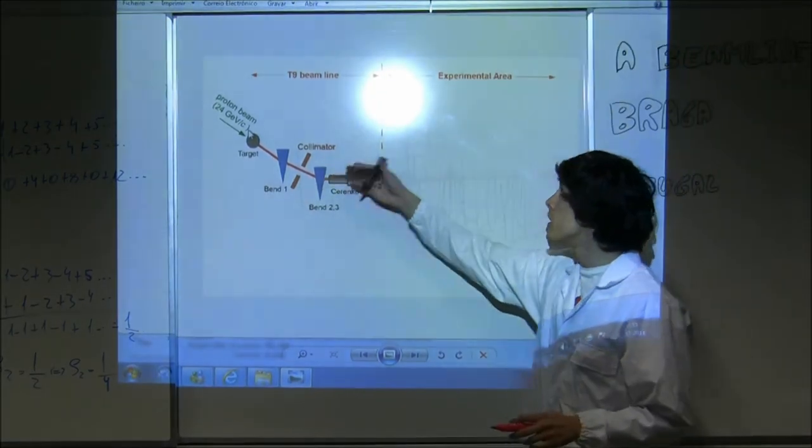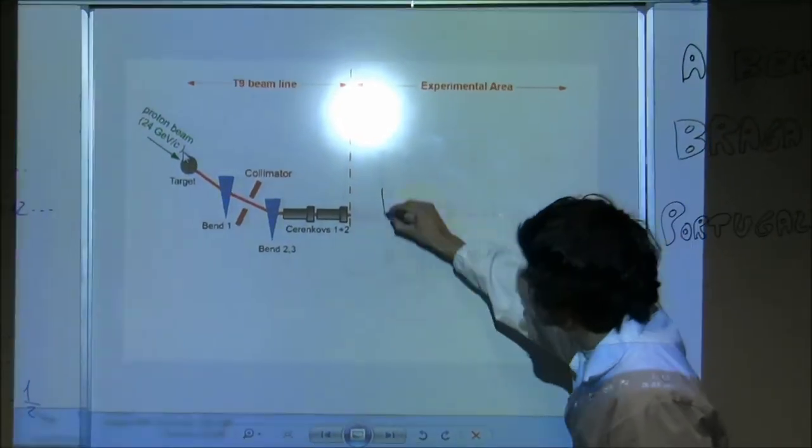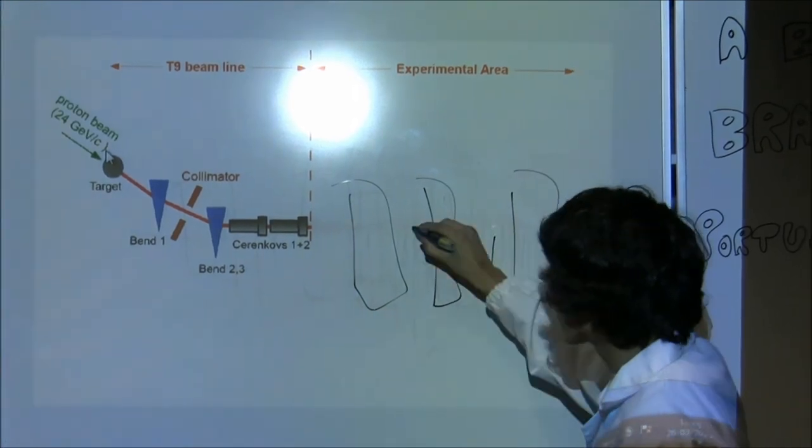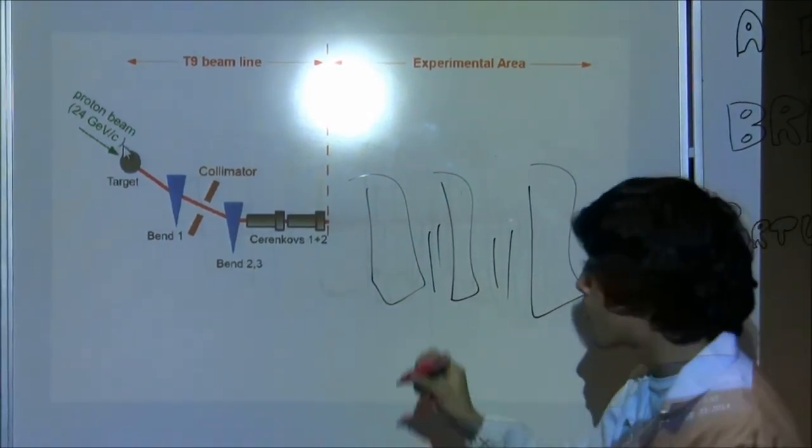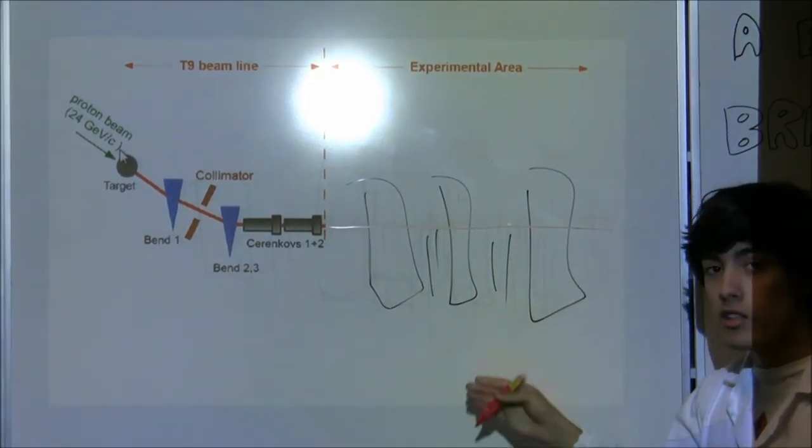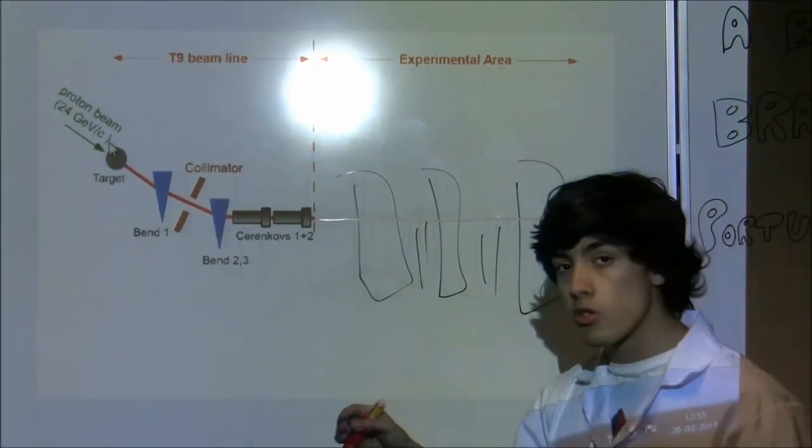Here we have our beam line. Here our experimental area. We will put some phantoms and between them some particle detectors. We will shoot a proton beam line through the phantoms and hopefully our particle detectors will show us whether the protons release their energy.